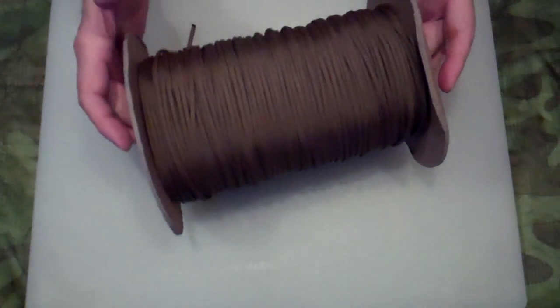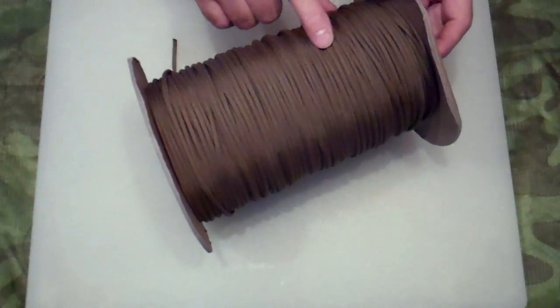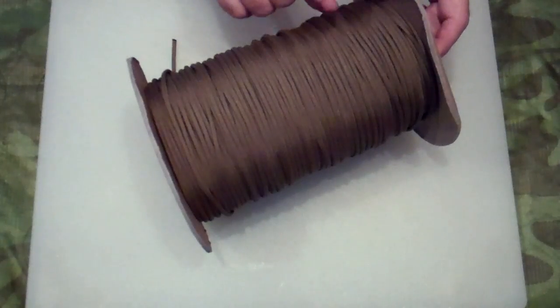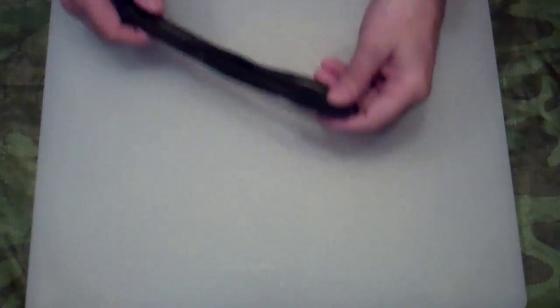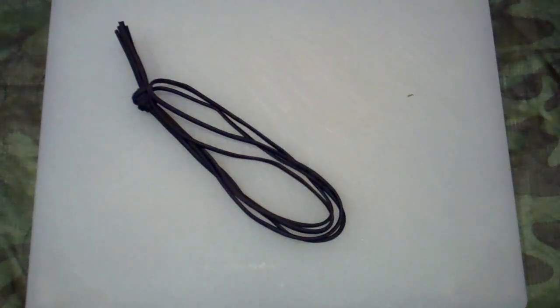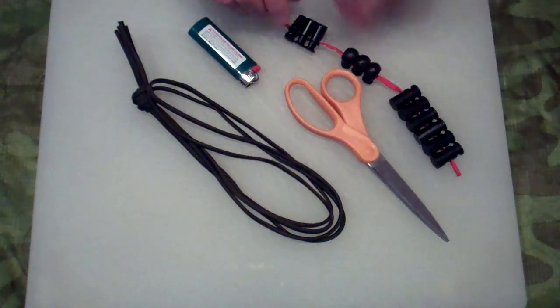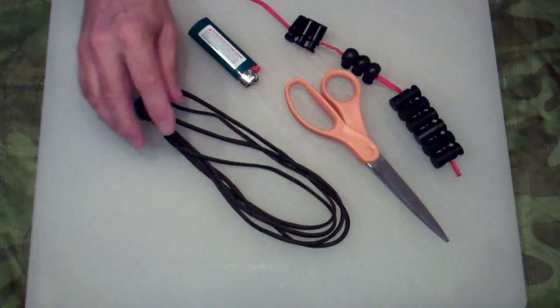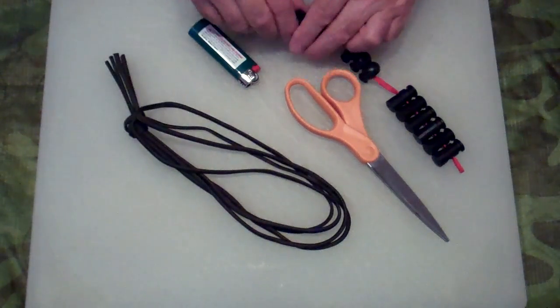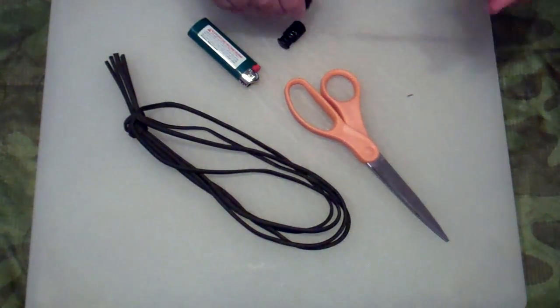Now if you do a lot of paracord projects I'd recommend you consider purchasing a spool of paracord. You can never have enough of this. Okay to make one you're going to need a length of paracord, a pair of scissors, a lighter, and a cord lock. In this case we're going to make two of them so I've got two lengths of paracord. We'll take two cord locks.